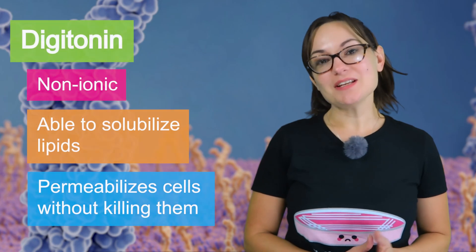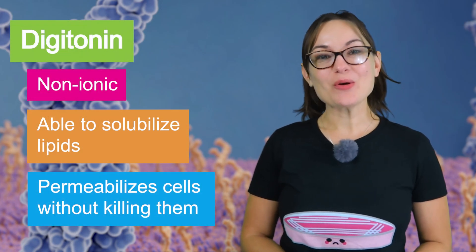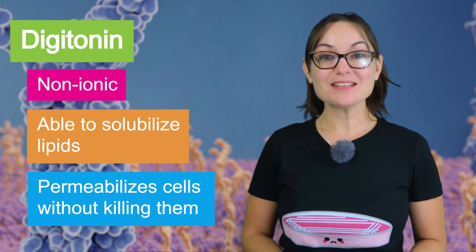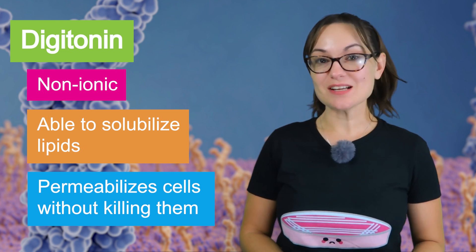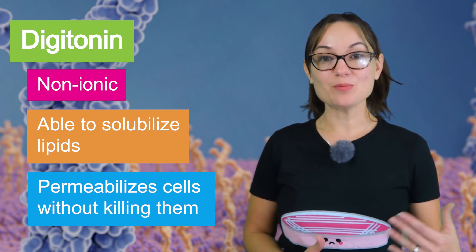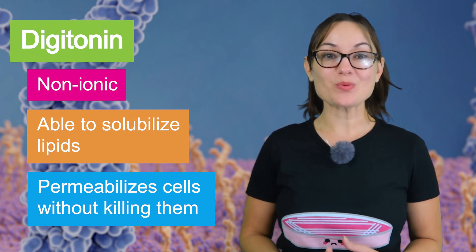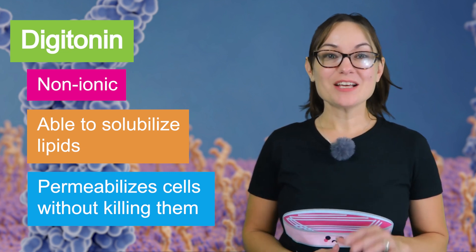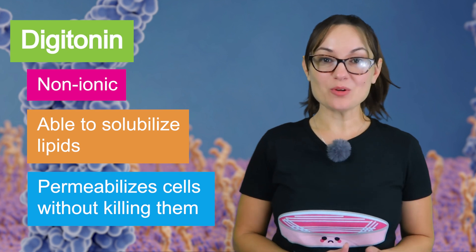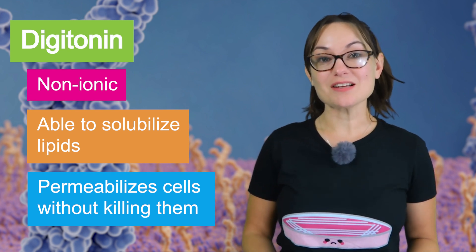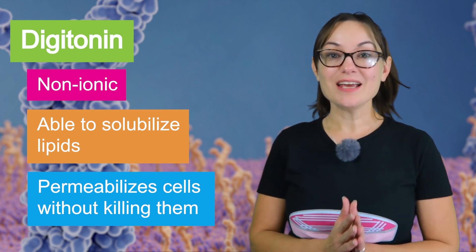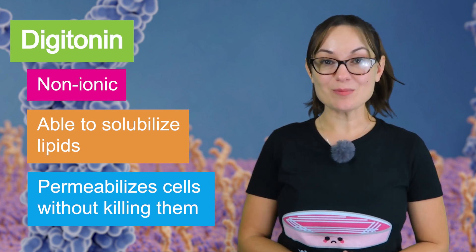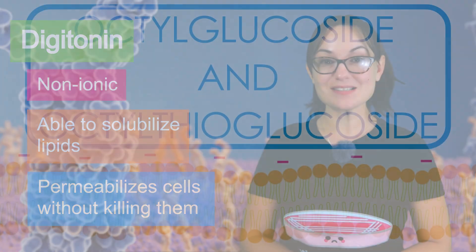Digitonin is a non-ionic detergent known for solubilizing lipids and is used in cell lysis to purify proteins or organelles in their native forms. It's also great for cell permeabilization without killing the cell, and finally, it can be useful in live cell labeling experiments.